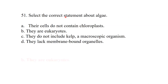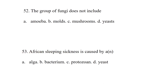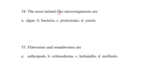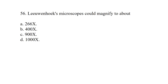Select the correct statement about algae: they are eukaryotes. The main group of fungi does not include amoeba — that is a protozoan. Sleeping sickness is caused by a protozoan. The most animal-like microorganisms are protozoans. Flatworms and roundworms are helminths. Even Hooke's microscope could magnify to about 266 times.